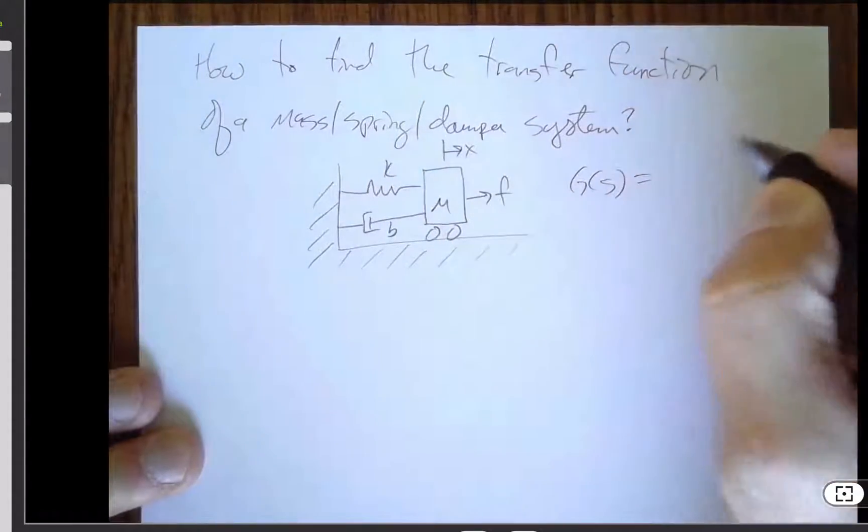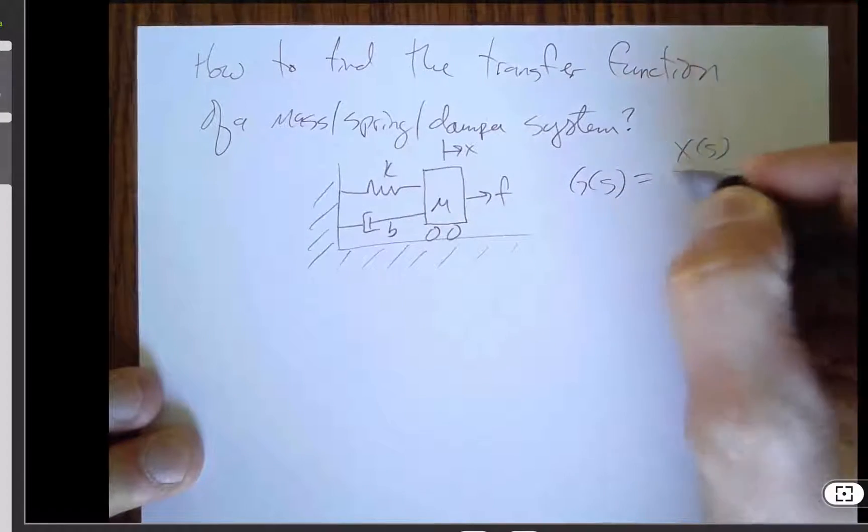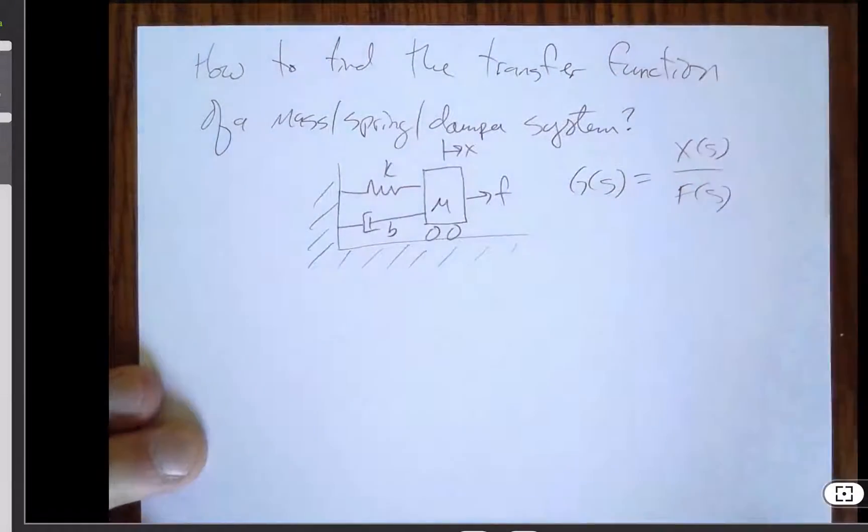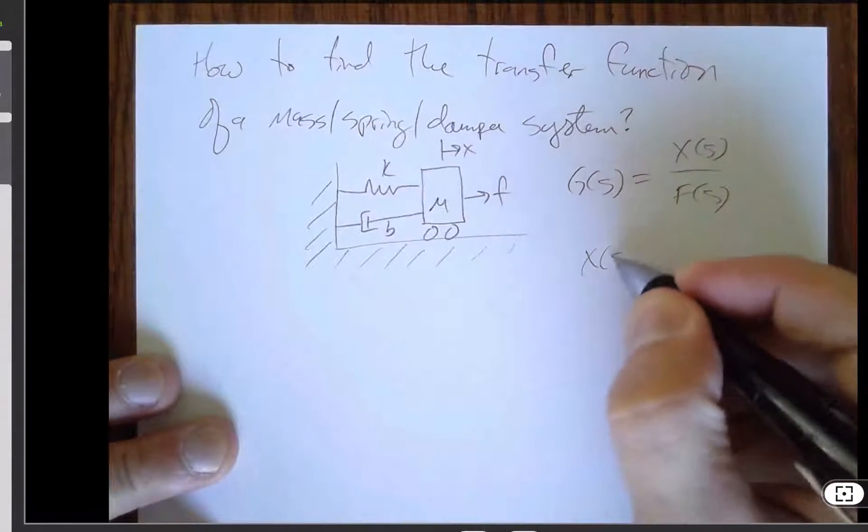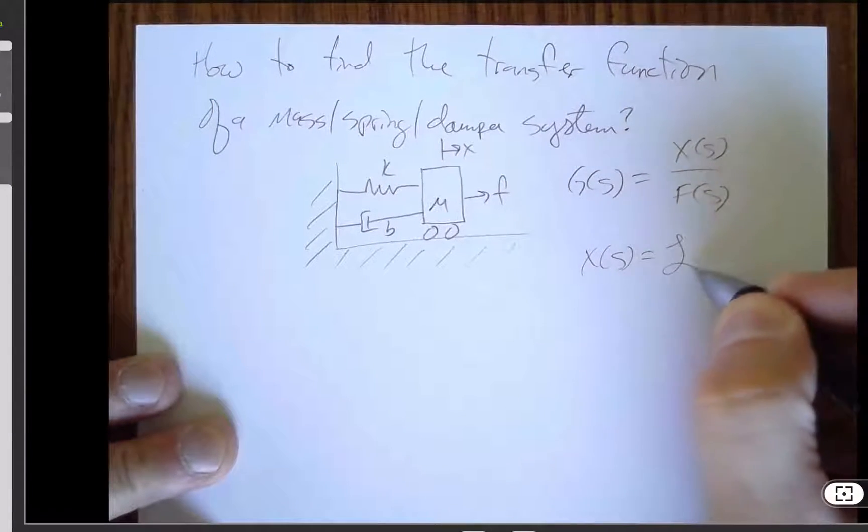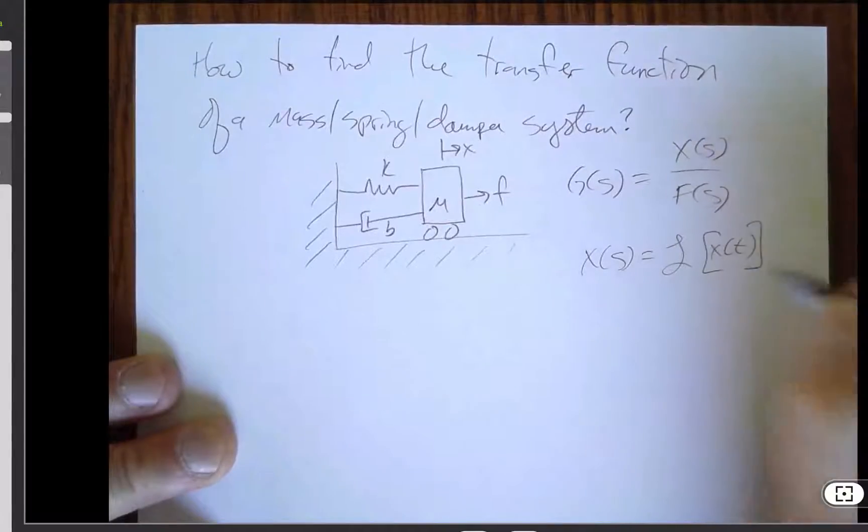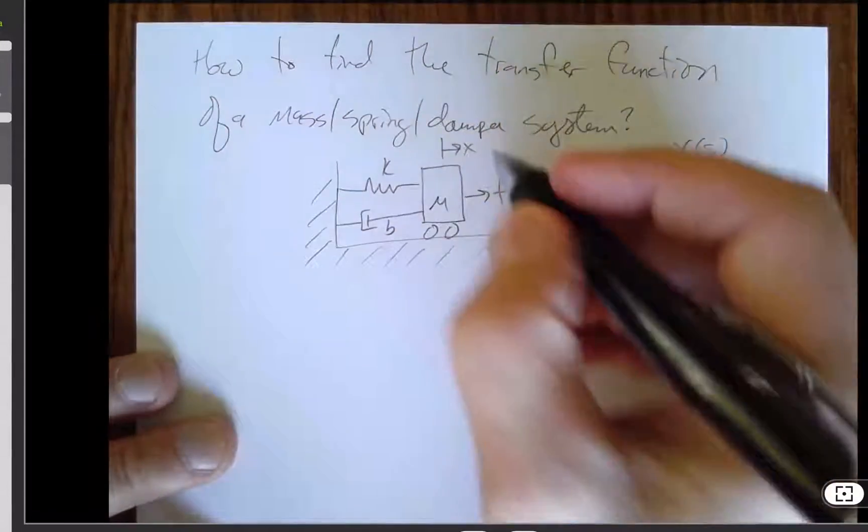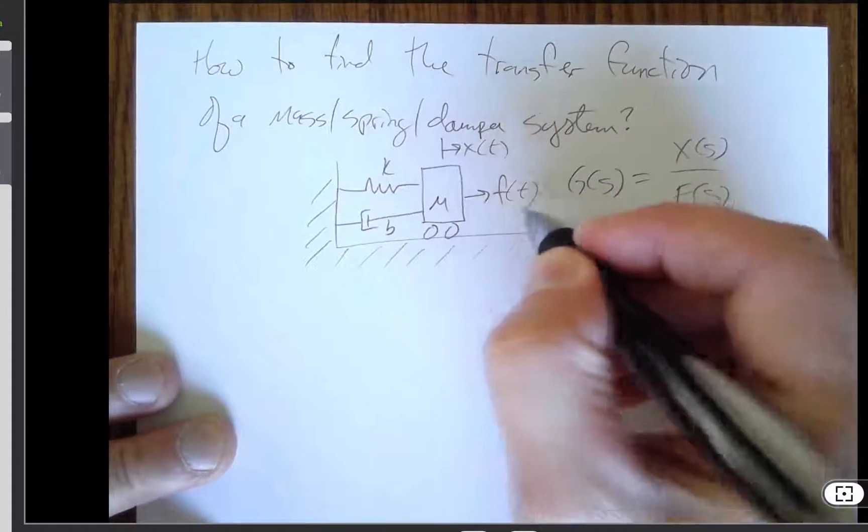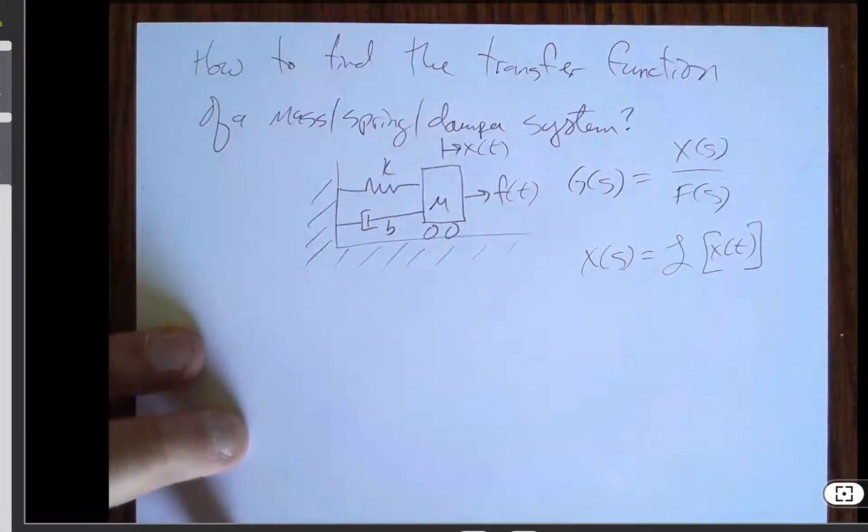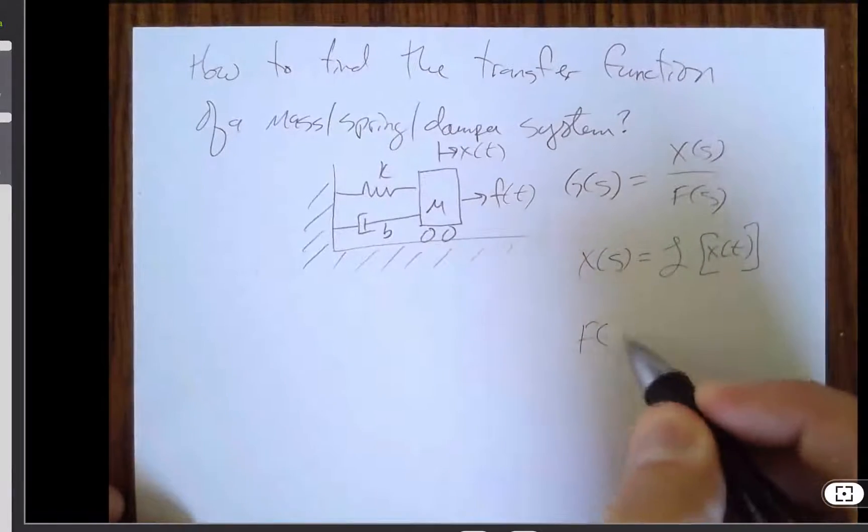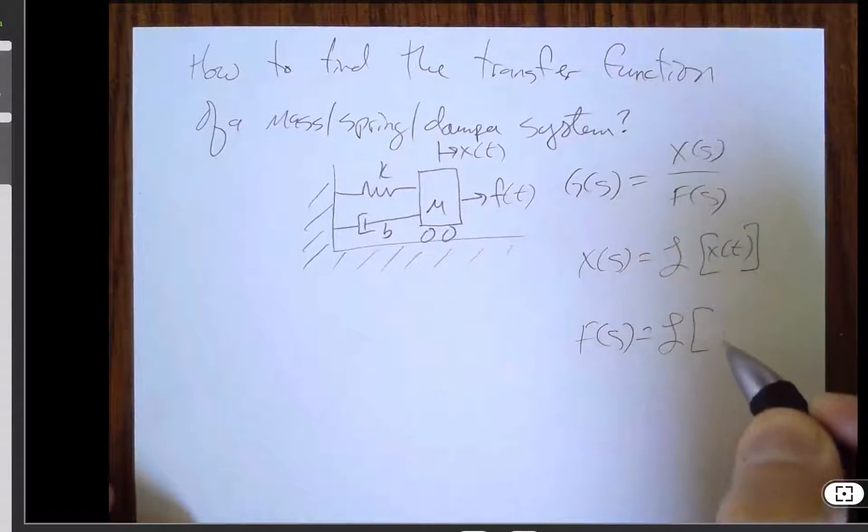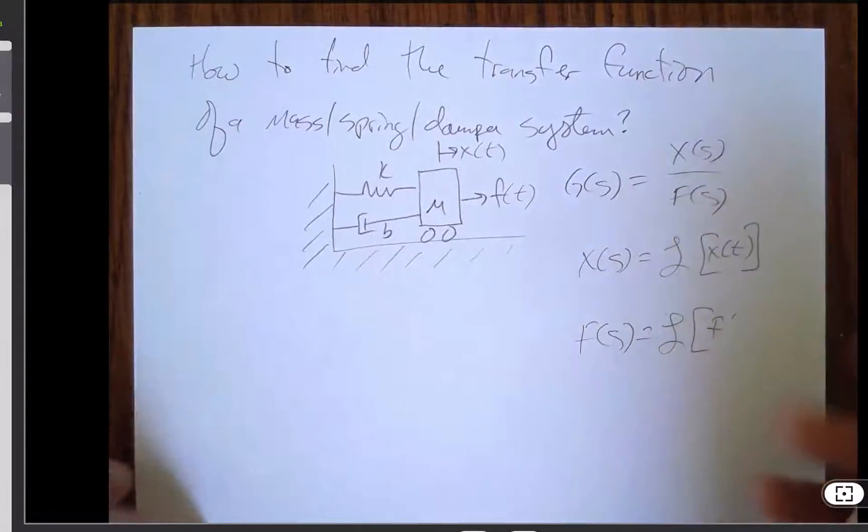When we say transfer function, we mean Laplace transform of the output divided by Laplace transform of the input. So in this case, x of s is understood to be the Laplace transform of little x of t. So we capitalize and we switch from t. So this is a variable that depends on time. The input force may depend on time. And then f of s is also the Laplace transform of little f of t.